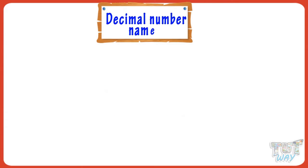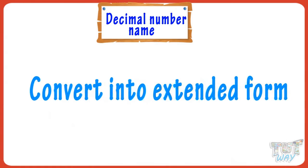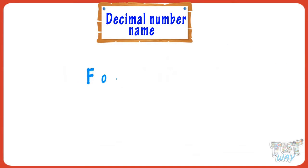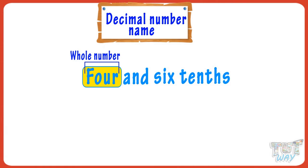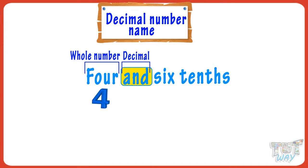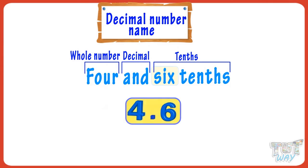Now we are given a decimal number name and we have to convert it into its standard form — that is, four and six tenths. The number before 'and' is the whole number, just write it as it is — it is four. Now 'and' stands for the decimal point, so put a decimal point in place of 'and.' Six tenths means six is the first digit after the decimal point. So we will write it as four point six.